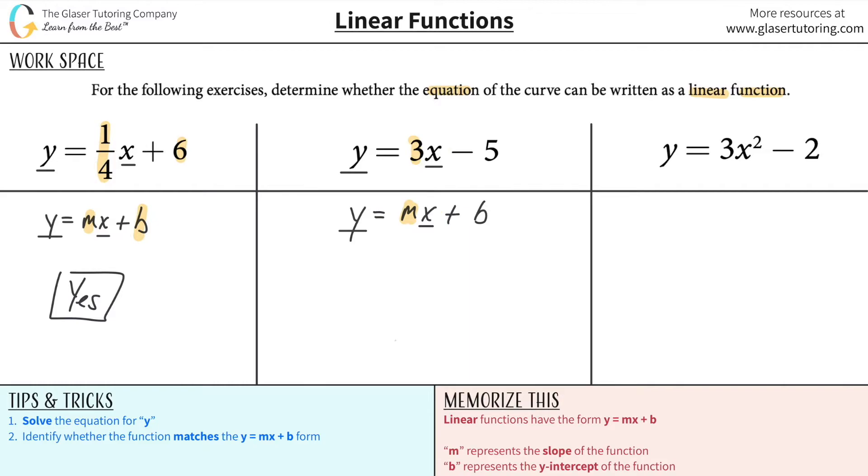Well, interestingly enough, couldn't I rewrite this to look something like this? Y equals 3x plus a negative 5. And now doesn't that look even better, meaning here's the plus sign, and then my b value is negative 5.